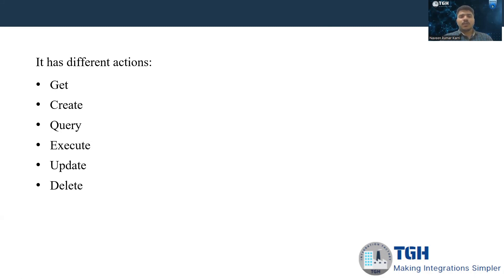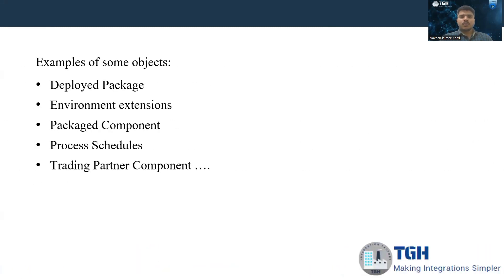Based on the actions, multiple objects are available. Some of the objects available in the Boomi AtomSphere API are: deployed package, environment extensions, package component, process schedules, and trading partner. So this is about the Boomi AtomSphere API.